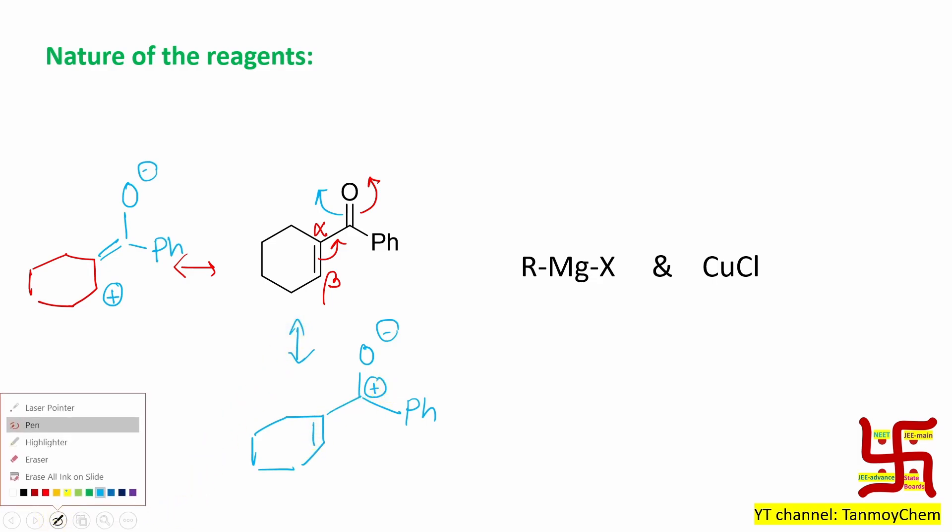Now actually, if you look at, this part is called as 1,2. I mean, this oxygen is called 1, this is 2. So if any addition takes place, that's called 1,2-addition. Now, sometime not only 1,2, this is 1 and this is 3 and 4. Sometime 1,4-addition also takes place. So technically, if you see two terms are used: 1,2-addition versus 1,4-addition. Now question: when 1,2-addition takes place and when 1,4-addition takes place? Depends on the nature of the reagent.